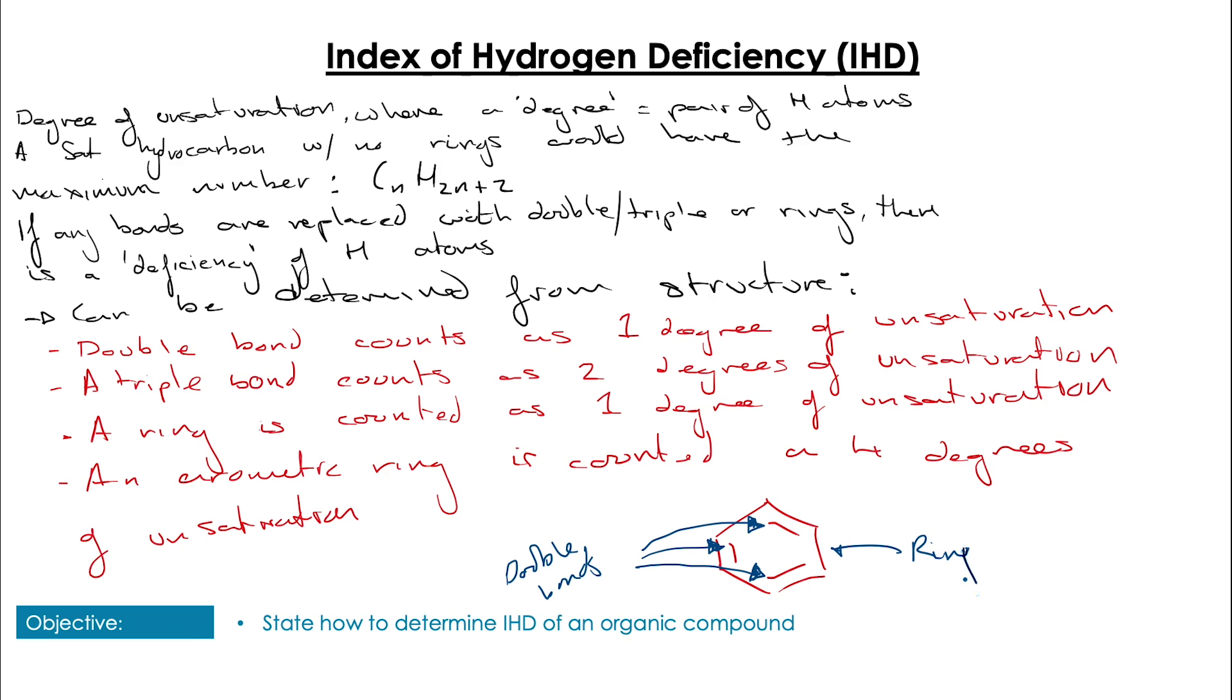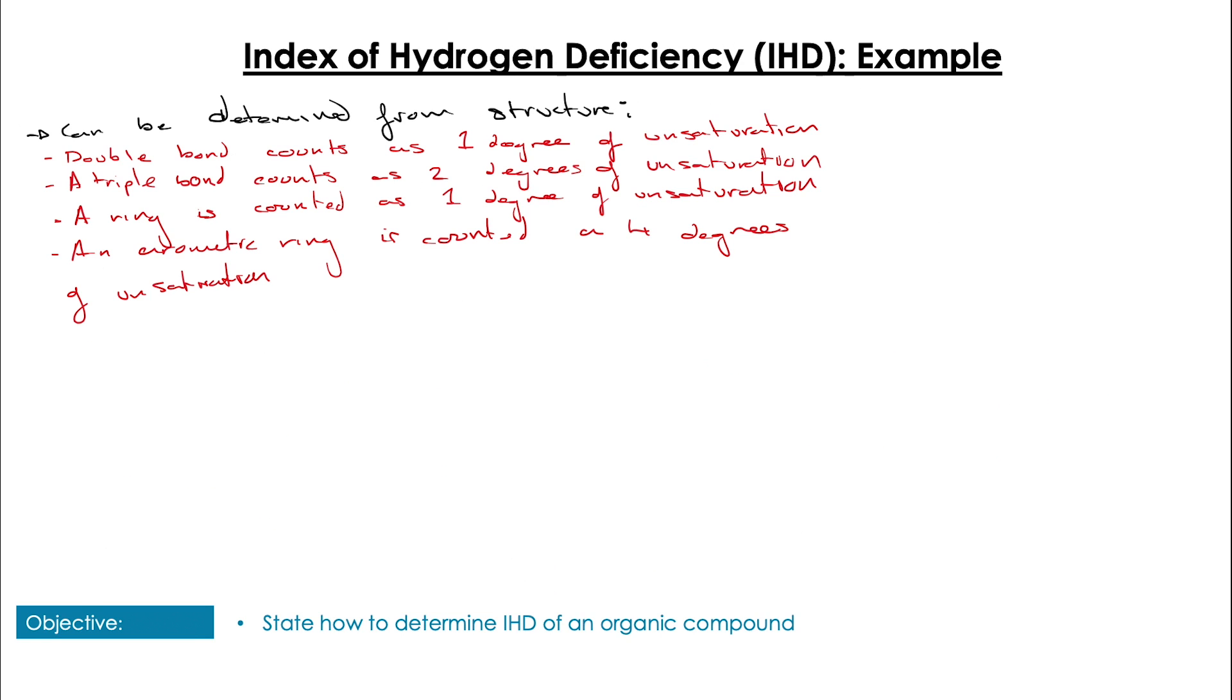But if we think about it, that kind of makes sense, right? Because we have a ring structure with three double bonds, so that's three degrees of unsaturation and the one degree of unsaturation from the ring structure, so we just added them together really.